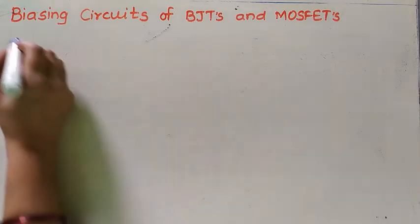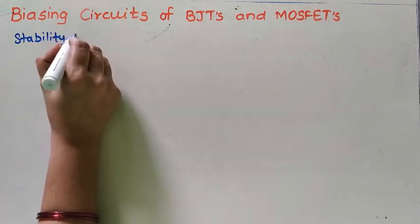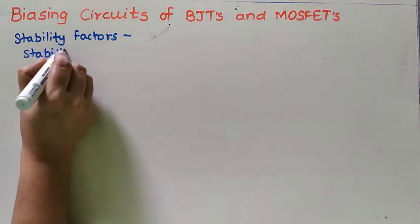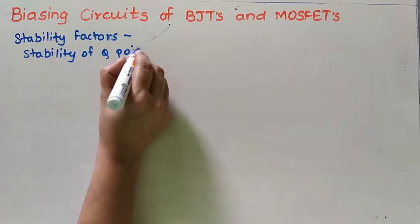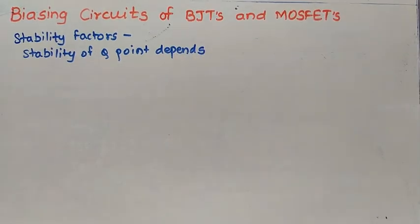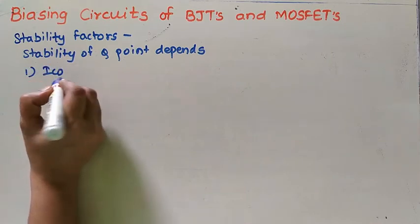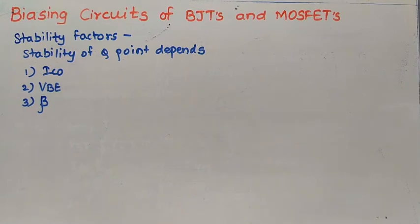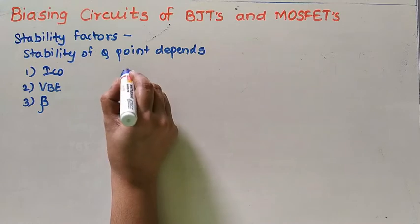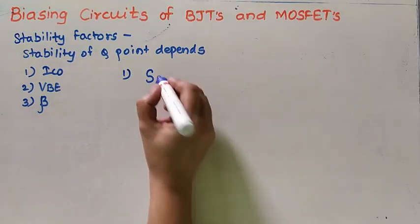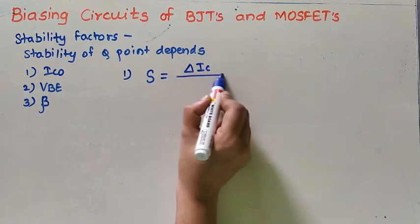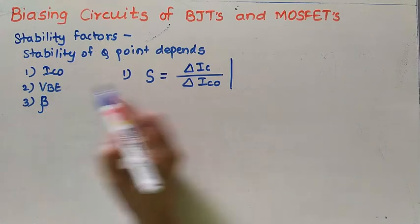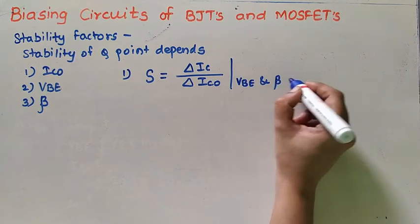Now we will see the stability factors. We have seen that the stability of Q point depends mainly on three parameters. First is ICO, that is leakage current. Second one is VBE, that is base to emitter voltage. And third one is beta value. Based on that, three stability factors are defined. The first stability factor is represented by S, which is given as change in collector current IC due to change in leakage current ICO, when the other two parameters — VBE and beta — are considered constant.